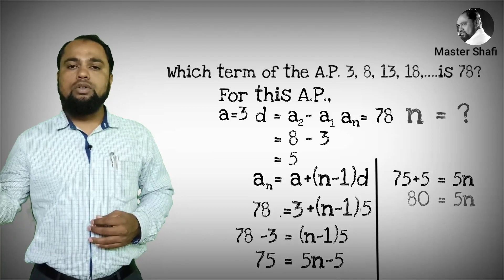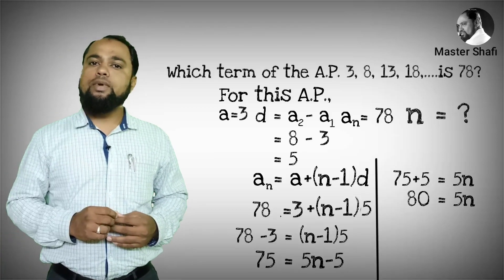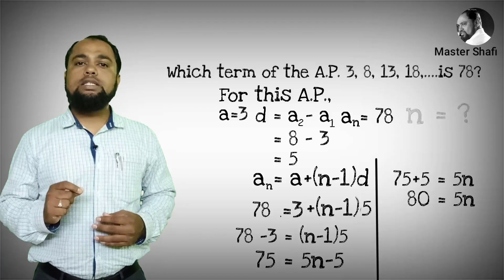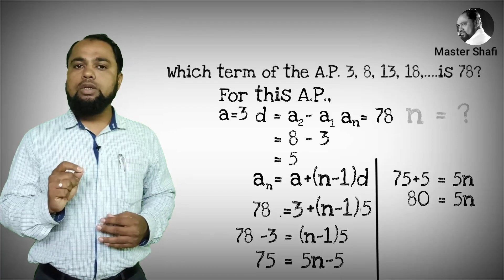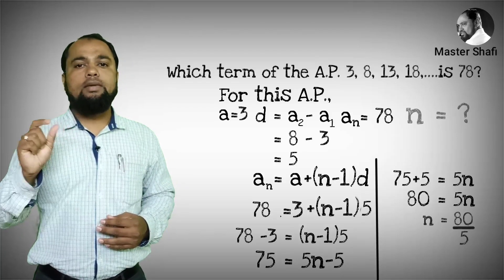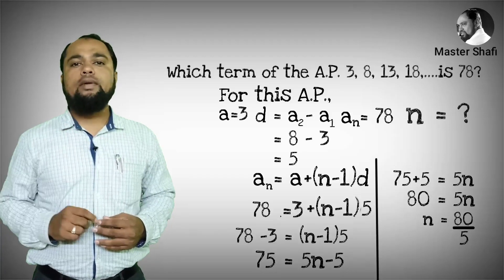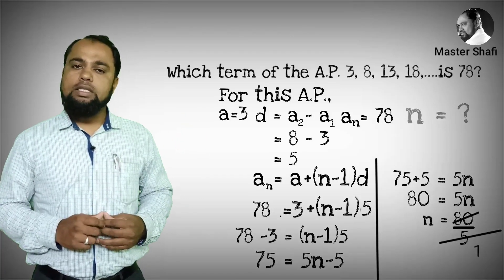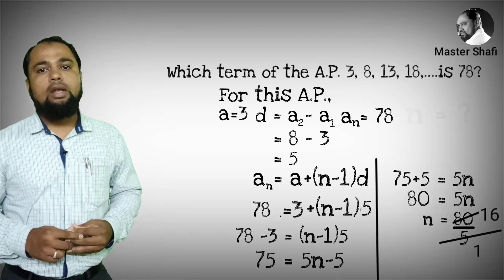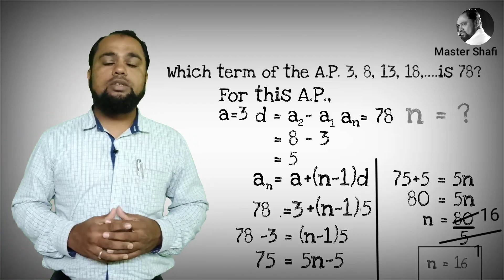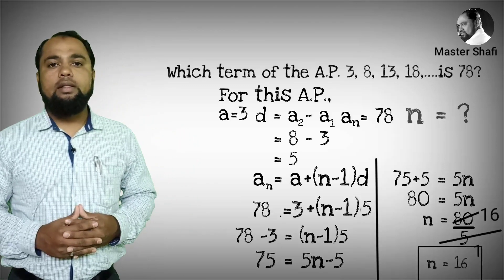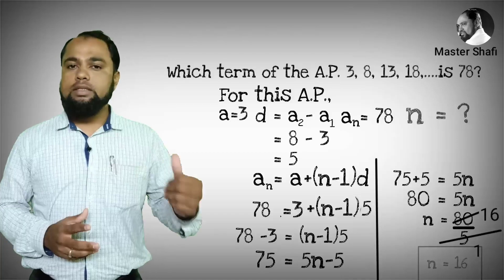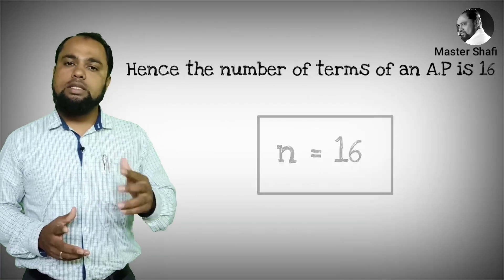We need to find the value of n, so 5n equals 80, therefore n equals 80 divided by 5. 80 divided by 5 is 16. Hence the value of n is 16, so we can say that the 16th term of this arithmetic progression is 78.